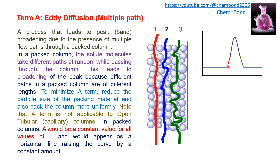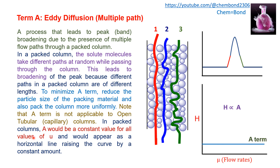This results in peak broadening. To minimize the A term, reduce the particle size of the packing material and ensure uniform packing of the column. Note that the A term is not applicable to open tubular or capillary columns. In a packed column, A is constant for all values of flow velocity, and appears as a horizontal line on the Van Deemter plot, confirming it is independent of flow rate.